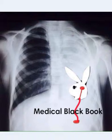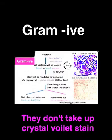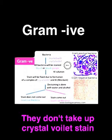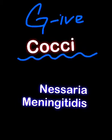Bismillah ar-Rahman ar-Rahim. Our topic for today is gram-negative organisms. The question arises: why is gram-negative bacteria called such? It is called gram-negative because it does not retain the crystal violet stain used in the gram-staining method of bacterial differentiation. Welcome to our basic discussion of gram-negative cocci.